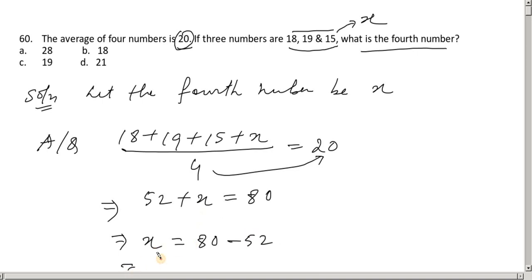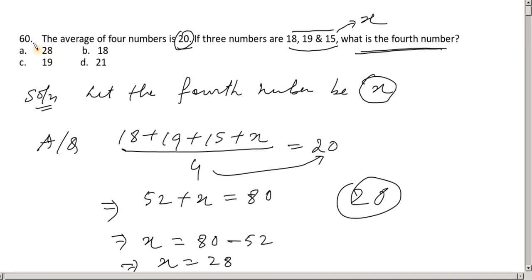Using this, the fourth number is found. The fourth number is called x, and x is the answer — number A. This is the school exam or matric exam method. This is the first video; we will see the next question in the next video.